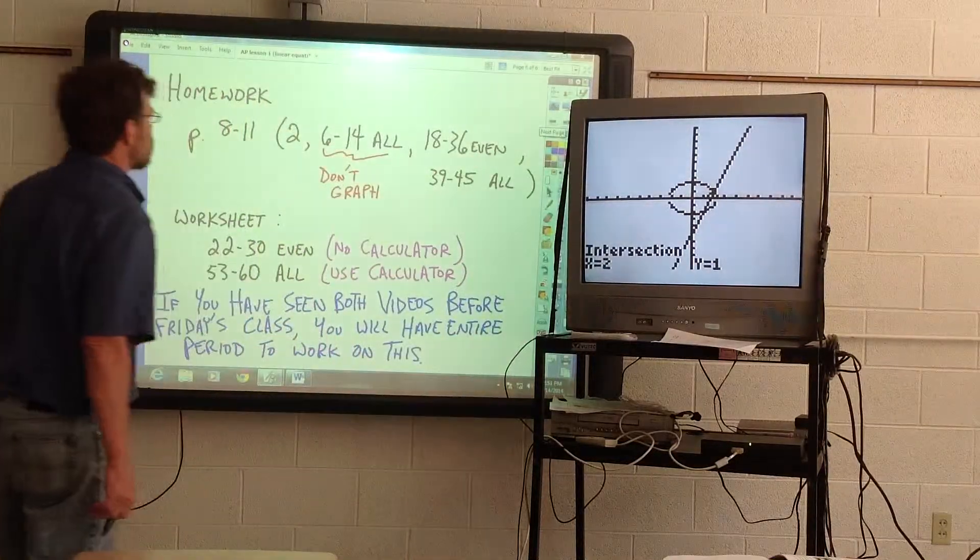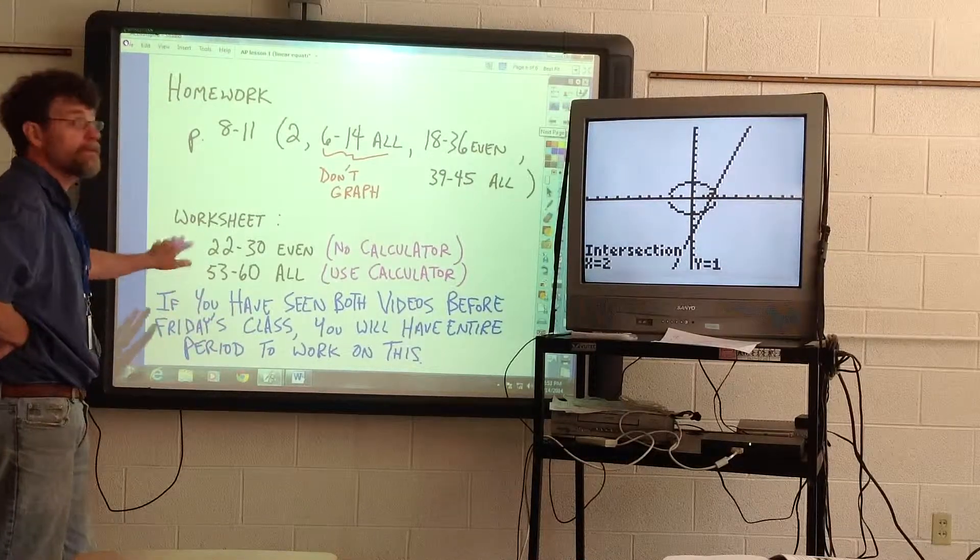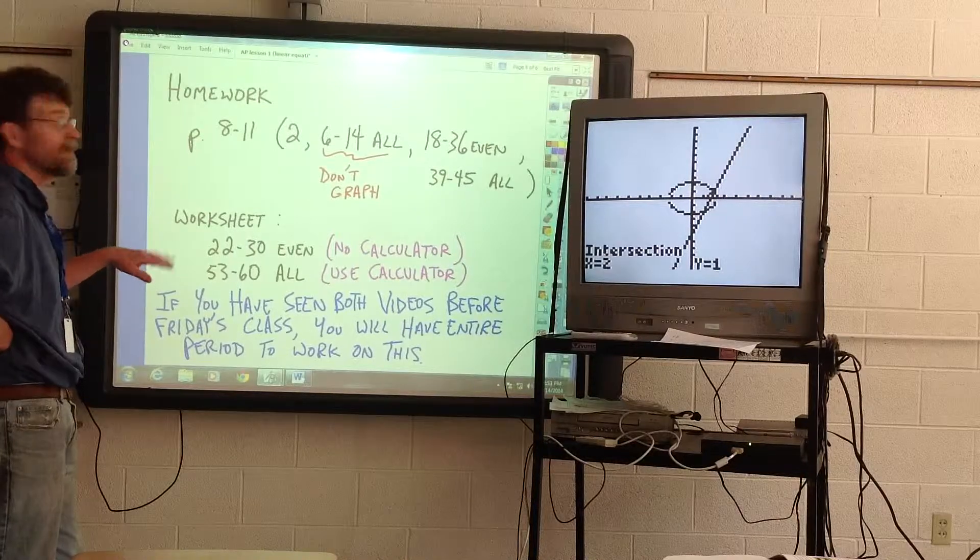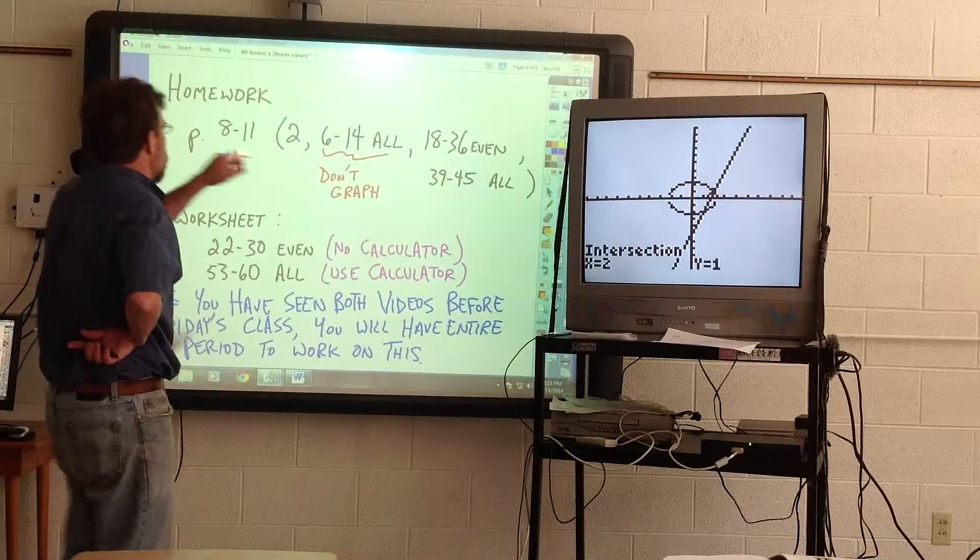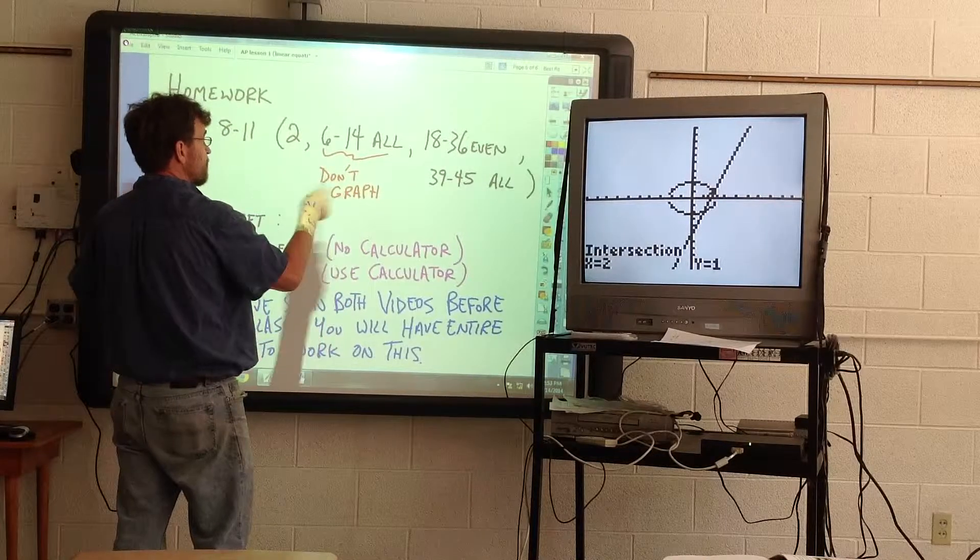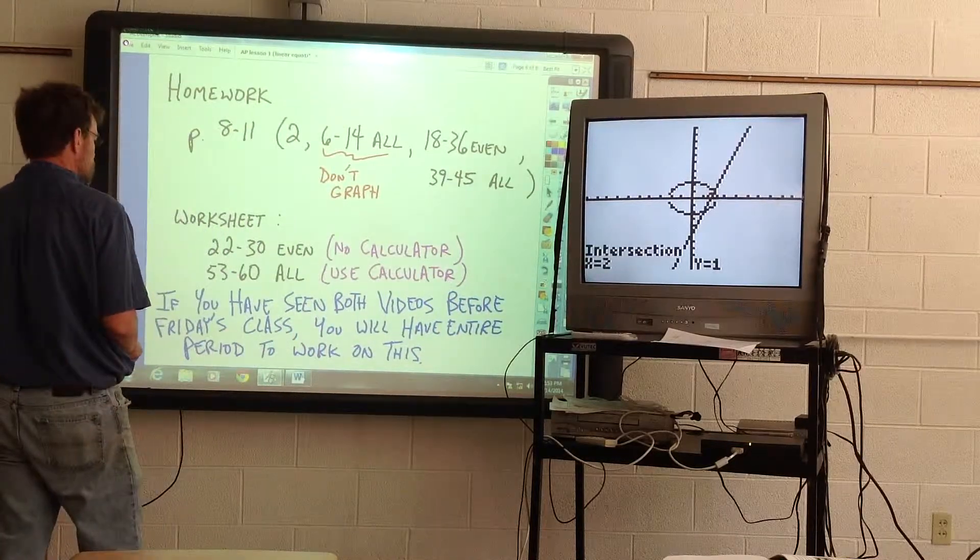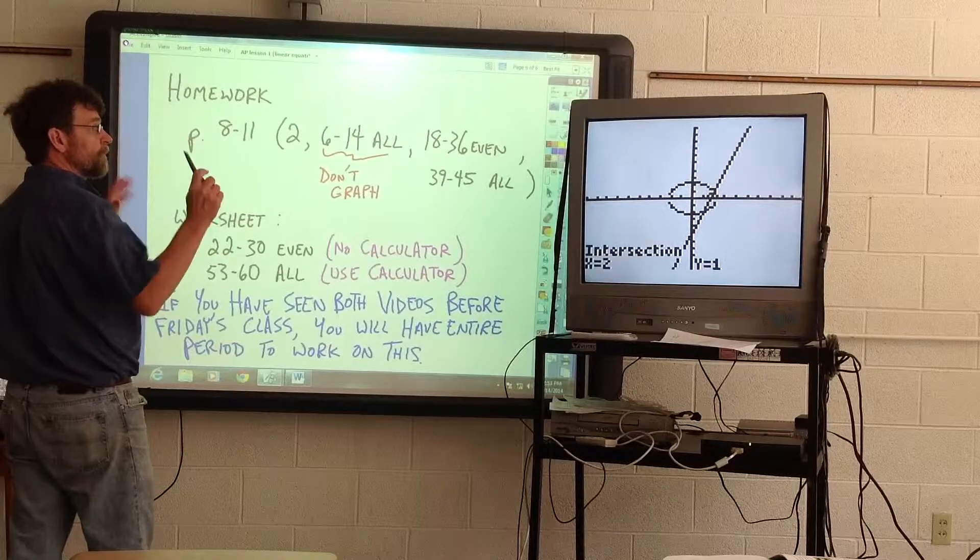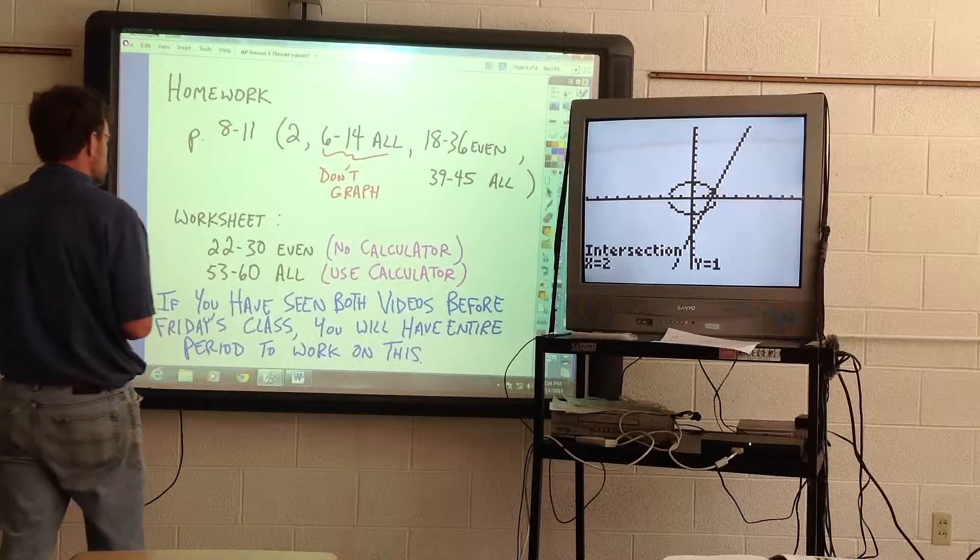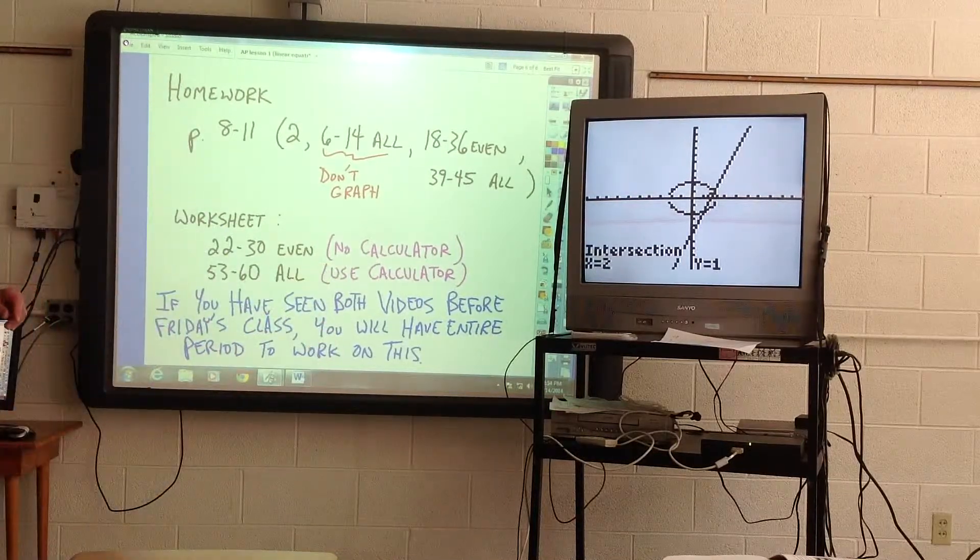All right. So for your assignment, if you've seen this video before the Friday class, you're going to have the entire period, which is about one hour I believe, to work on this assignment. You should get it done. These aren't too hard up here. Do page 8 through 11 in your book. Number 2, 6 through 14 all. Don't graph them, it says graph, don't graph them. 18 through 36 even, 39 through 45 all. And then on the worksheet, which I will load onto the website along with the videos here, or I'll pass them out in class also, 23 through 30 even, don't use calculator, 53 through 60 all, use calculator.